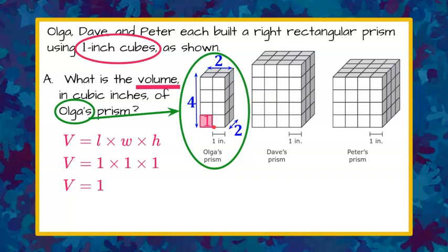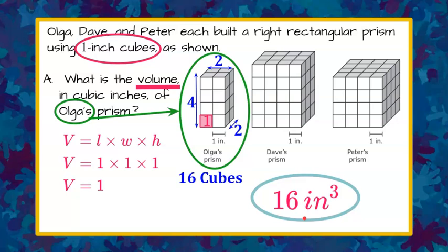And then we can see there are eight behind it. Or you could do four times two times two. Either way, you're going to get 16 cubes, making it a volume of 16 cubic inches for Olga's prism.